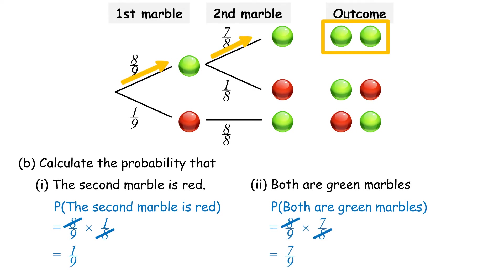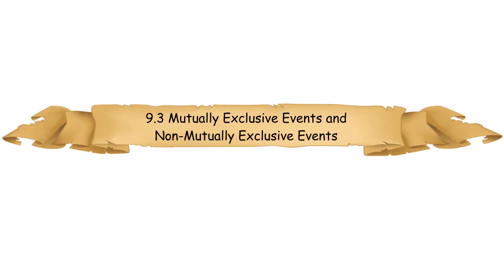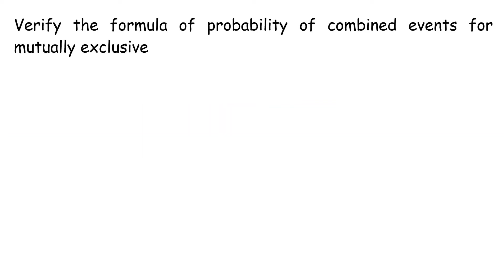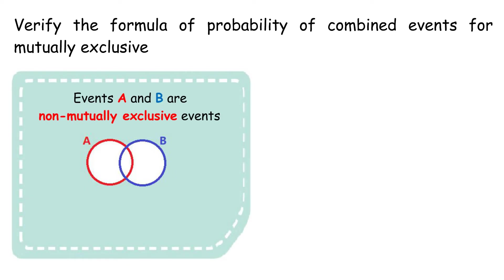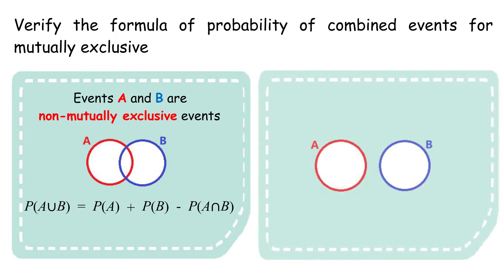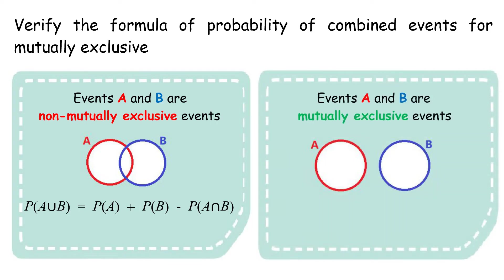9.3 Mutually Exclusive Events and Non-Mutually Exclusive Events. Verify the formula of probability of combined events. For non-mutually exclusive events A and B, if there is intersection: P(A union B) equals P(A) plus P(B) minus P(A intersection B). Events A and B are mutually exclusive events if there is no intersection between events A and B. The probability that an outcome will be in one event or the other: P(A union B) equals P(A) plus P(B).